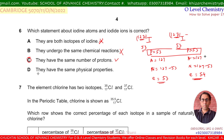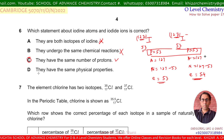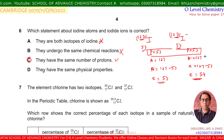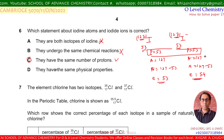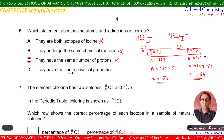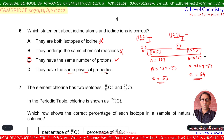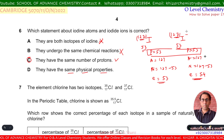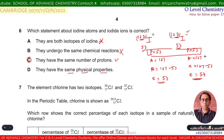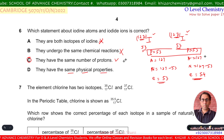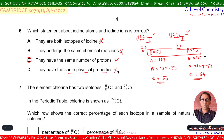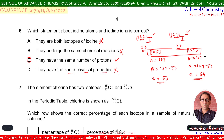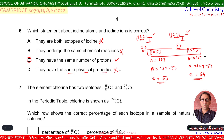Option D — same physical properties — is incorrect because one is an ion and the other is an atom. C is confirmed as the correct option.